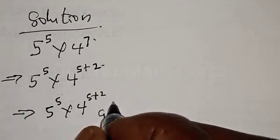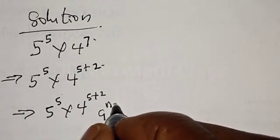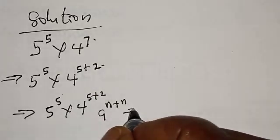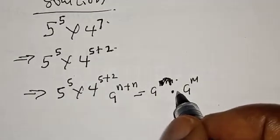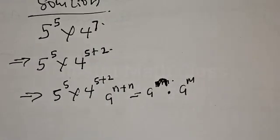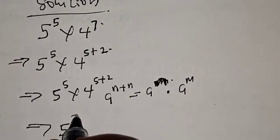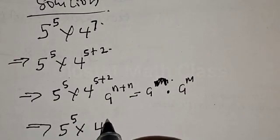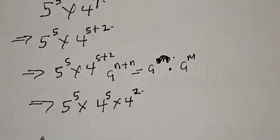If you have a raised to power m plus n, this equals a raised to power m multiplied by a raised to power n. Applying that rule, this implies that we have 5 raised to power 5 multiplied by 4 raised to power 5, multiplied by 4 raised to power 2.